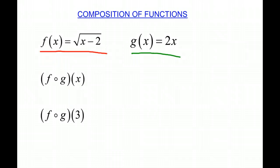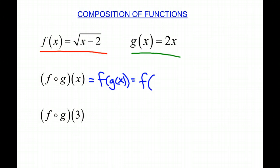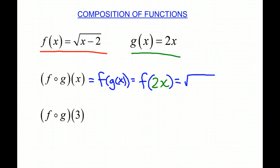Now the composition of functions, or f of g of x, can also be written as f of g of x. Which means that whenever we see an x in f, we're going to put our entire function g of x into that. So we're going to say f of what is g of x — it is 2x. And then we're going to put that in for our x in the equation. So we have the square root of 2x minus 2, because our x was 2x.